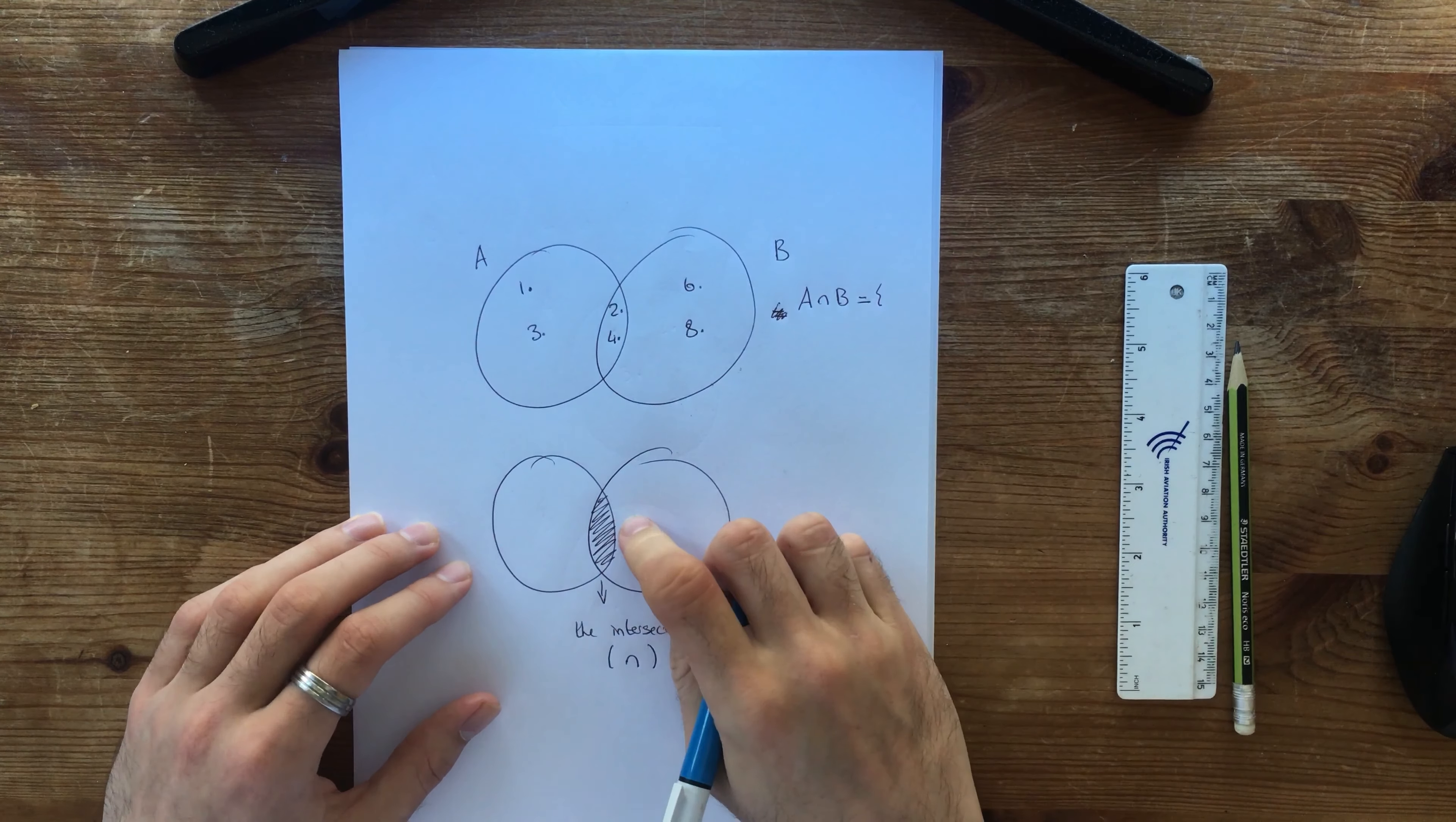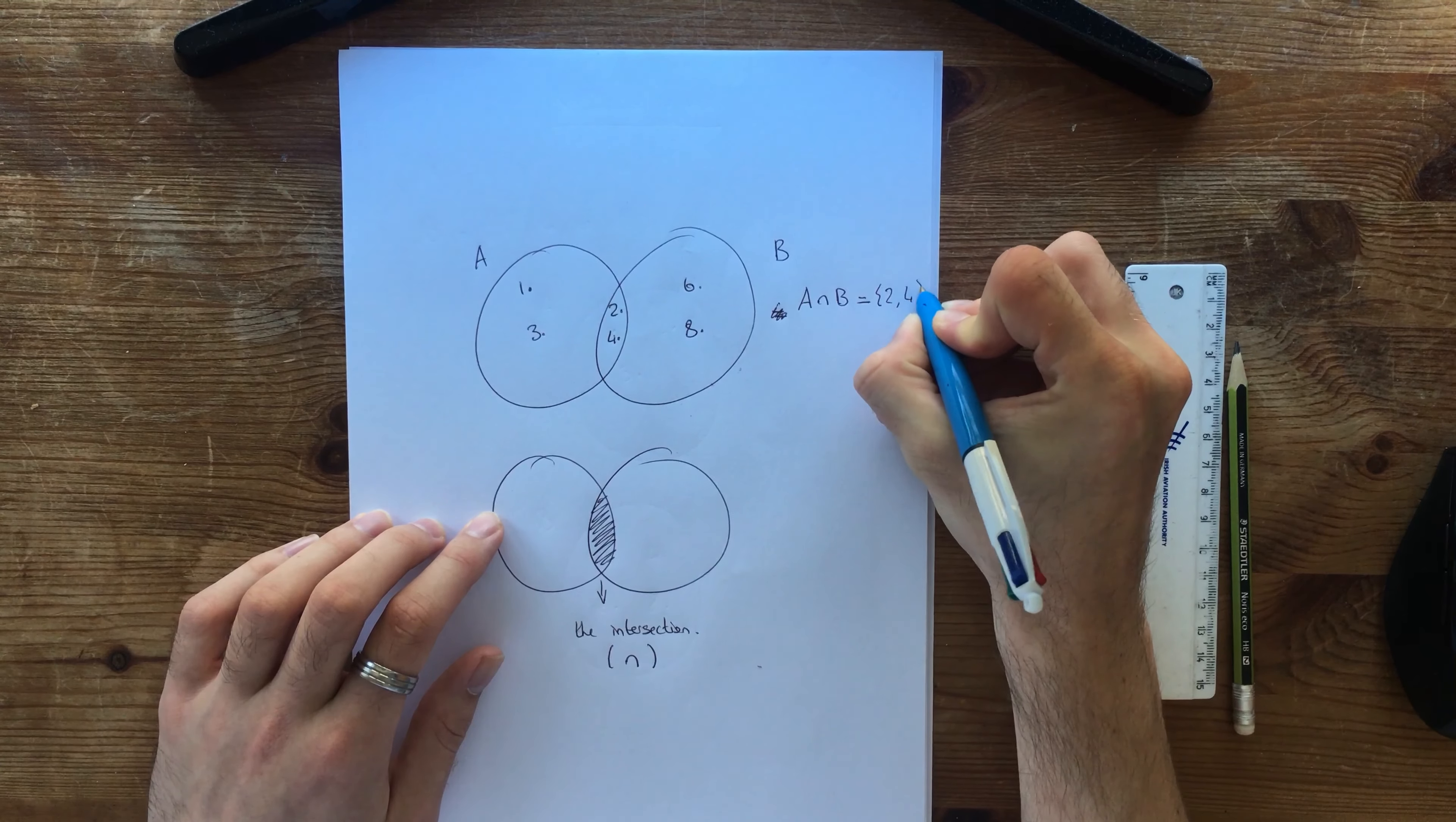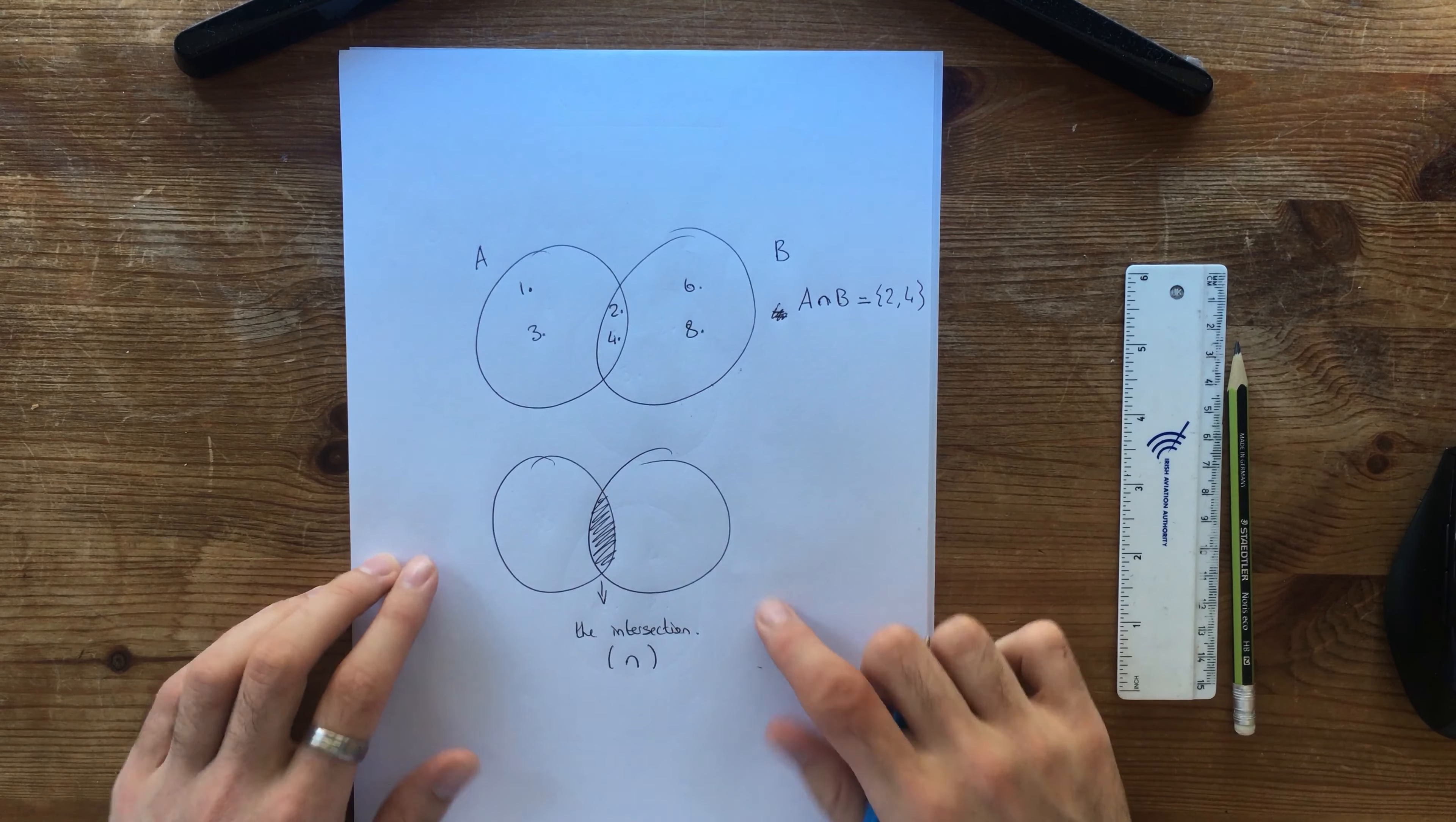So what set is A intersection B? So the intersection is this middle bit, remember? So what's in that middle bit? Well, 2 and 4 are in that middle bit. So there is your intersection. So what that means is the intersection of A and B, so the middle bit of A and B, what's in A and what's also in B is 2 and 4. That's your intersection.